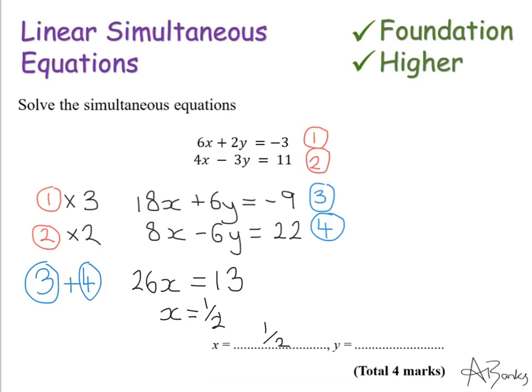I've still got to find my value for y. This is the final step. Now I know that x is a half. I can substitute this into either one of these equations I have here, or even these ones. But probably the best idea is to do it in one of these and pick the one that looks simplest. It's completely up to you. Either one will work. I'm going to go for the second one because it hasn't got negatives in it.